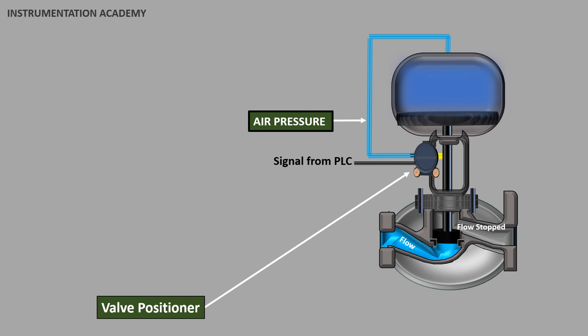If there is no positioner, the pneumatic control signal goes directly to the actuator. As there can be other forces acting on the valve stem, the accurate positioning cannot be achieved.